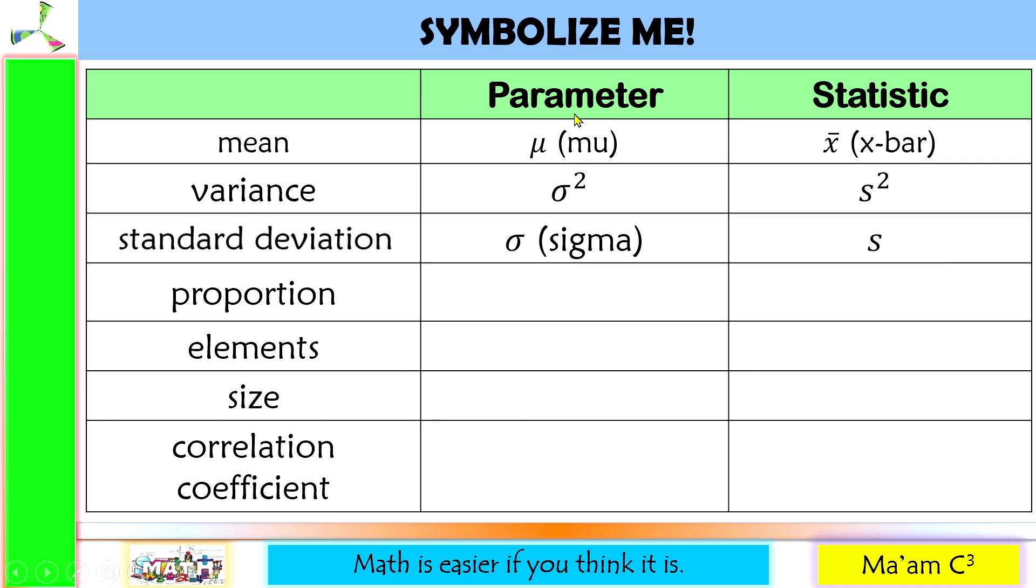Proportion. For parameter, we use p. Other books use capital P. And for statistic, we use p hat.